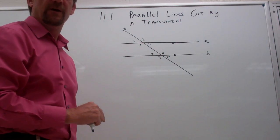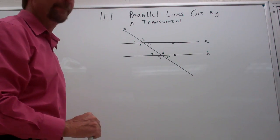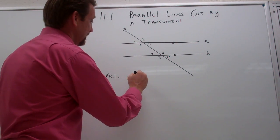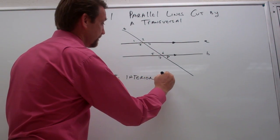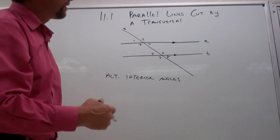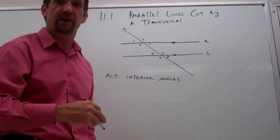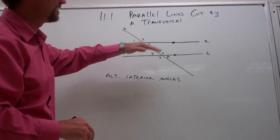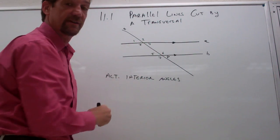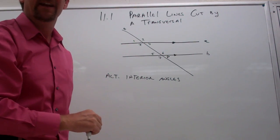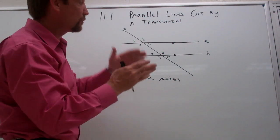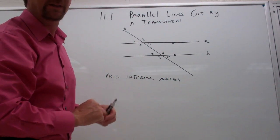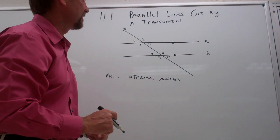The first one I want to talk about are called the alternate interior angles. Interior is talking about the inside — think about your car: you've got the interior and the exterior. The interior is the part inside the car. When we talk about the interior angles, we're talking about the angles that are in between the lines, in between lines A and B. The interior angles in my example are three, four, five, and six. The exterior angles — the angles that fall outside of the parallel lines — are one and two, seven and eight.